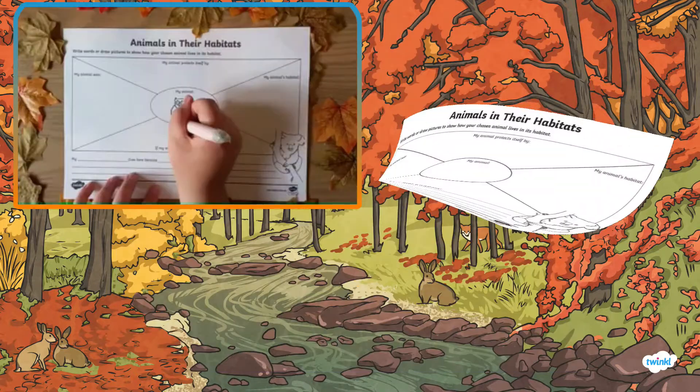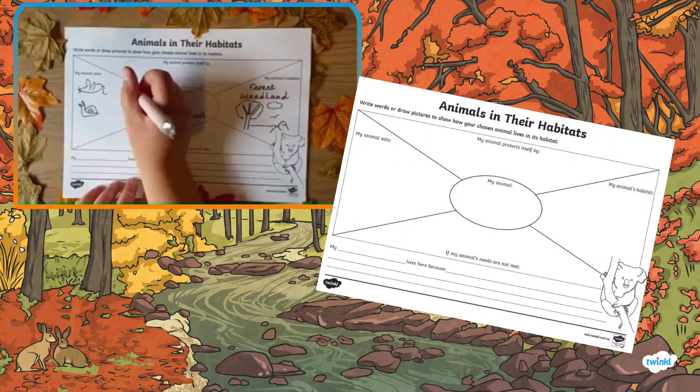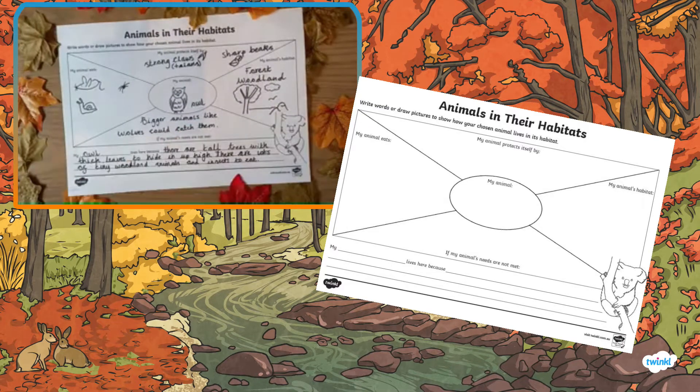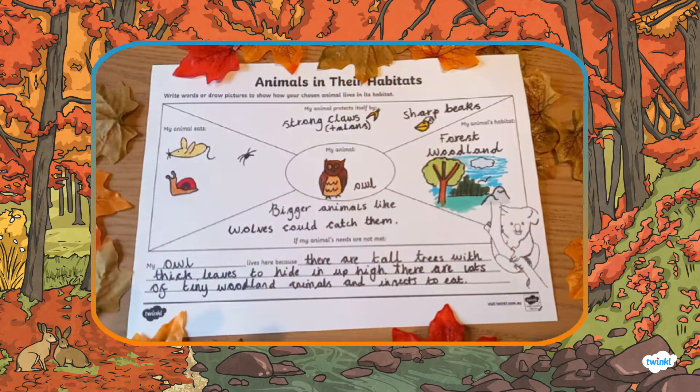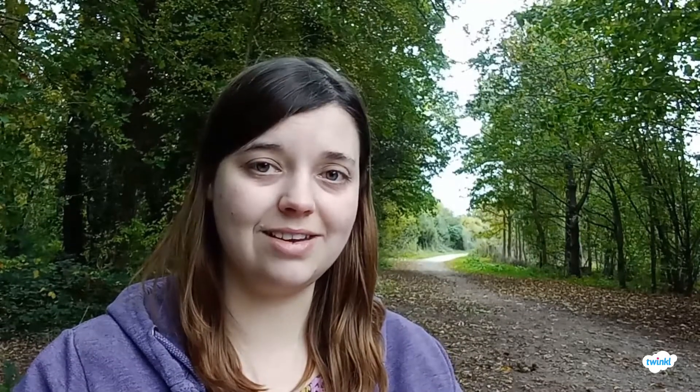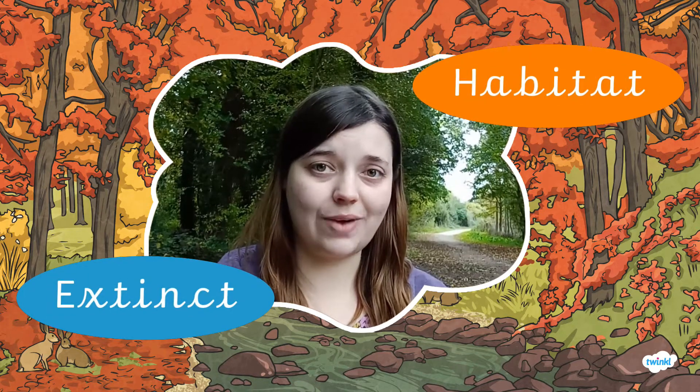You could use this 'animals in their habitat' sheet to allow the children to apply their learning. Give each child their own animal and ask them to complete the sheet describing where the animal lives, what it eats, and what will happen if it doesn't have the right environment to live in. See if the children can remember the key vocabulary, like using the words 'habitat' and 'extinct' correctly.